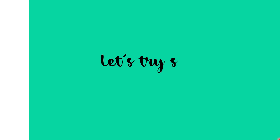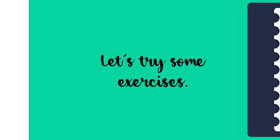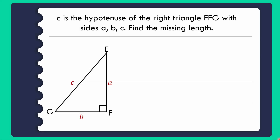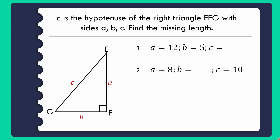Let's try some exercises. C is the hypotenuse of right triangle EFG with sides A, B, and C. Find the missing length: first, A equals 12, B equals 5, C is unknown; second, A equals 8, B is unknown, C equals 10; and third, A is blank, B equals 40, C equals 50. Using the Pythagorean theorem formulas, let us solve for the missing lengths.